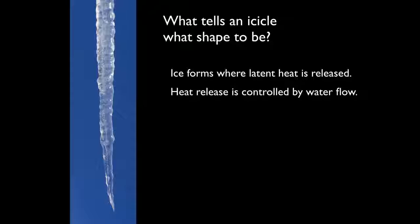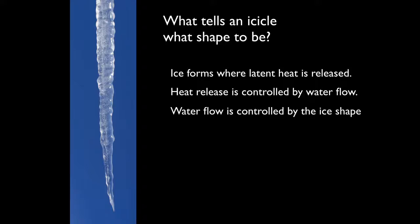First we need to know how ice forms. Ice forms from water when you remove a certain amount of heat or energy. If you take water at zero degrees and you remove the latent heat, you get ice at zero degrees. The ice is going to form wherever the heat can get out, and that heat release is controlled by where the water flows. Every icicle is covered by a thin layer of supercooled water, just a few hundred microns thick, and the heat coming out has to get through that water. So that water flow controls where the heat is released, and hence where the ice will form. The water flow is flowing over this complicated shape that's evolving—where the water flows is controlled by the shape, which depends on where the ice forms.